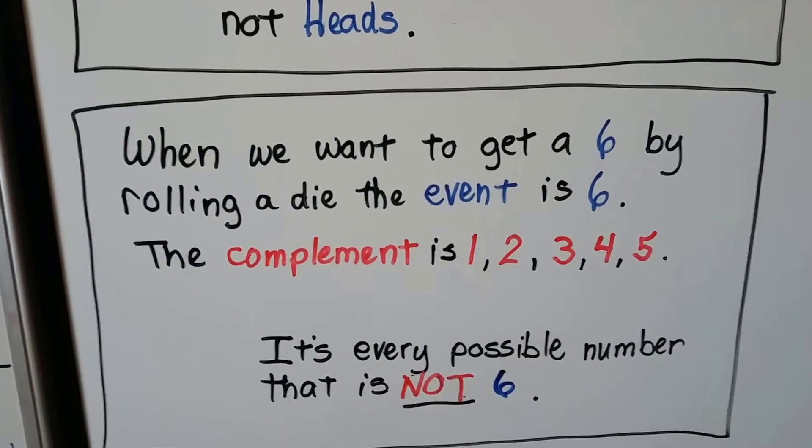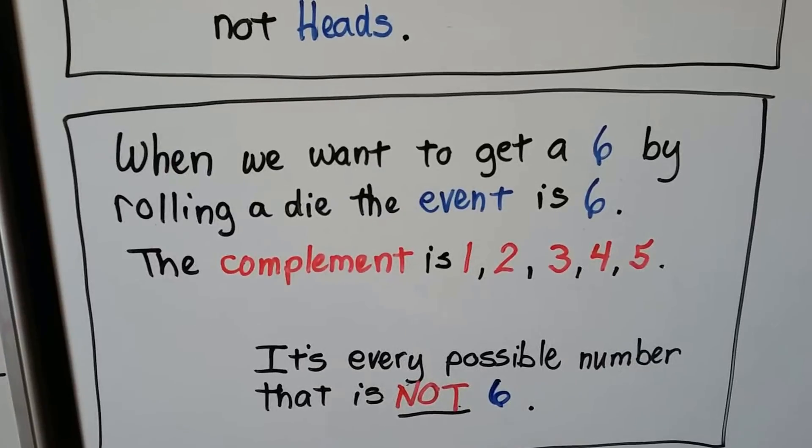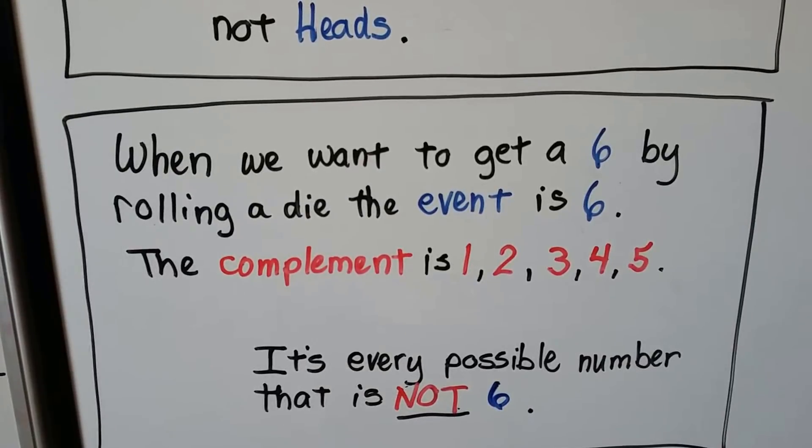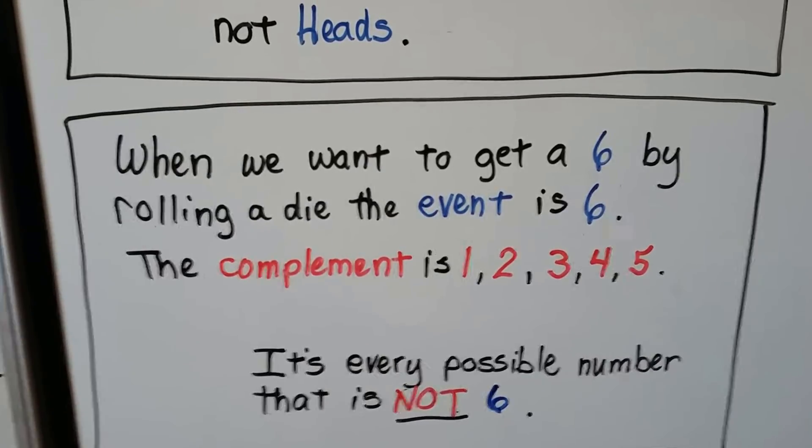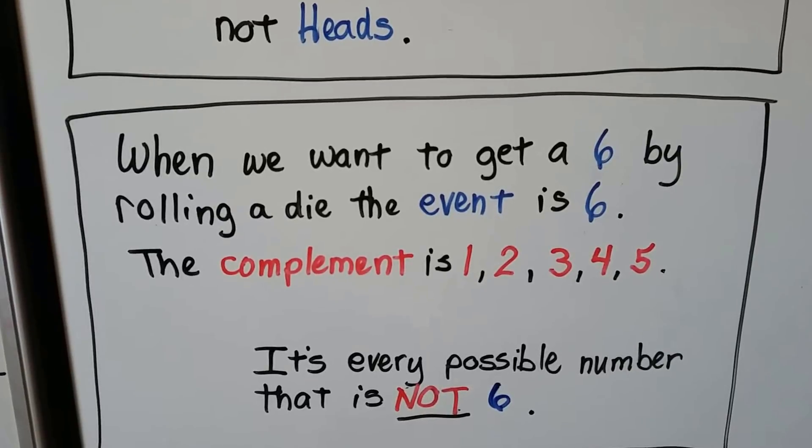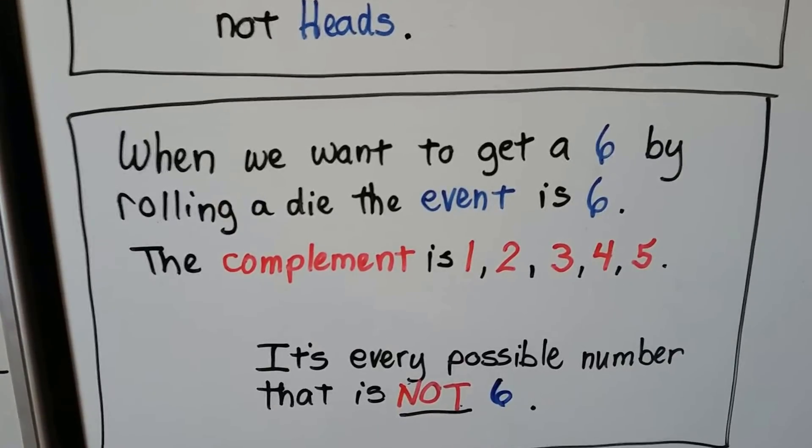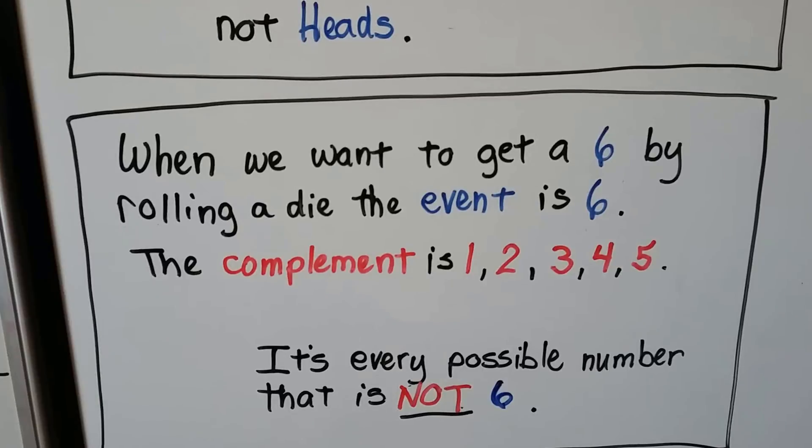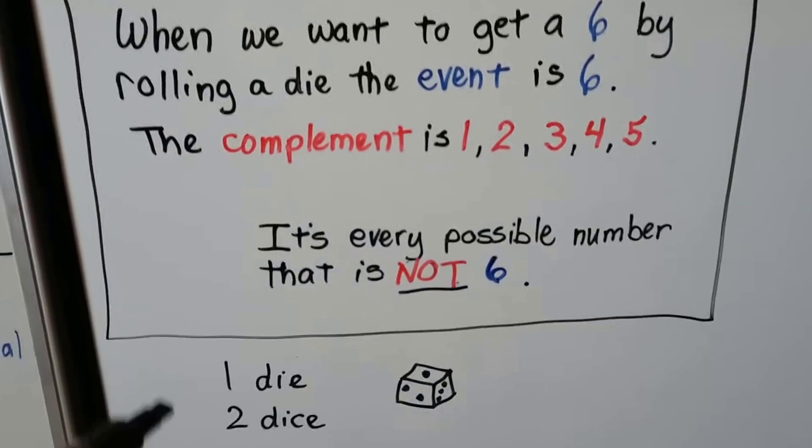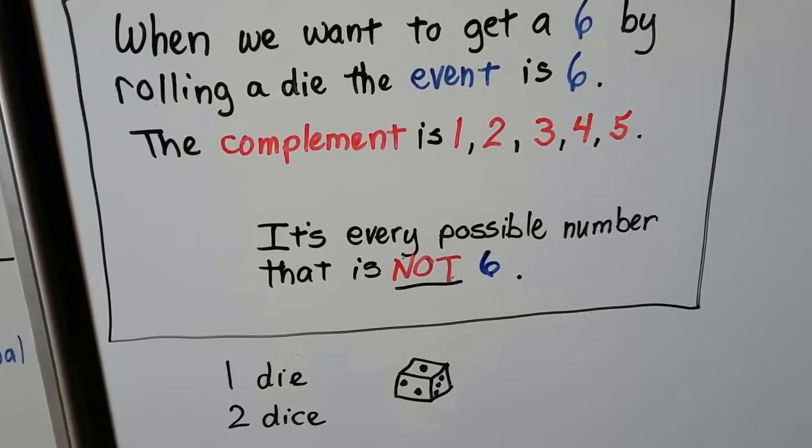When we want to get a six by rolling a die, the event is six. It's what we want. The complement is one, two, three, four, and five. It's every possible number that's not six. So just remember, if you have one it's a die and if you have two, it's dice.